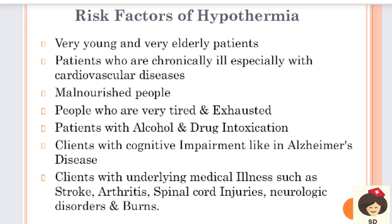Patients with alcohol or drug intoxication - alcohol and drug intoxication can cause severe vasoconstriction and decreased body temperature. Clients with cognitive impairment like Alzheimer's disease - patients will have memory loss and cannot think properly or make proper judgments. They will not know that if there is cold temperature, they need to cover themselves with warm clothing or use heaters. So they are exposed more to extreme temperatures. Clients with illness such as stroke, arthritis, spinal cord injuries, neurological disorders, and burns.